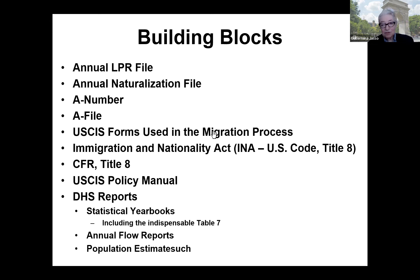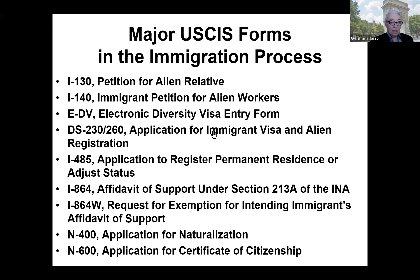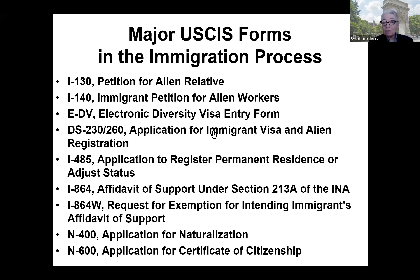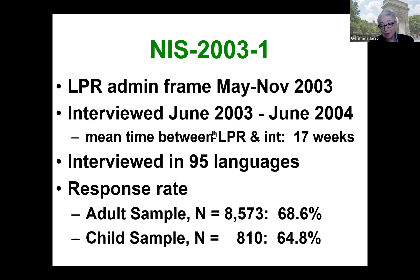We're going to look at some of those forms, and then the essential resources — the law, the USCIS policy manual, DHS reports, including what I consider an indispensable table in the DHS statistical yearbooks. These are only some of the forms. You can go to the USCIS website and see all the forms, each presented beautifully with an introductory page, clickable PDF instructions, and a clickable PDF form. I'll also bring in a little information from the new immigrant survey, a federally funded longitudinal survey of new LPRs and their children.